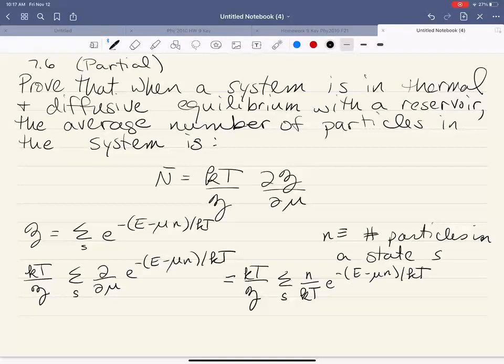So that means that we have one over our partition function times the sum over all the states of the number of particles in each state little n times e to the minus (E - μn)/kT.